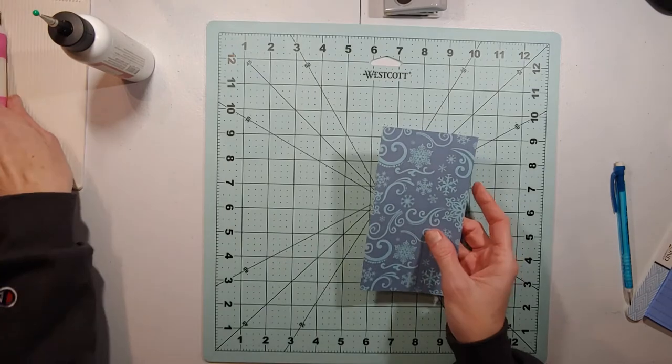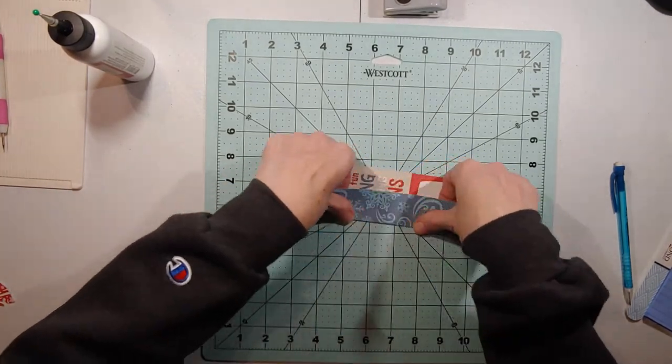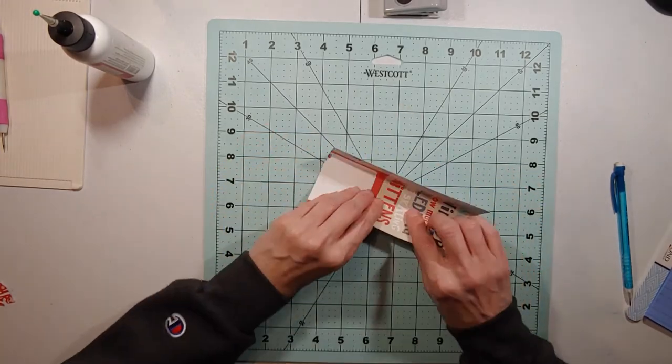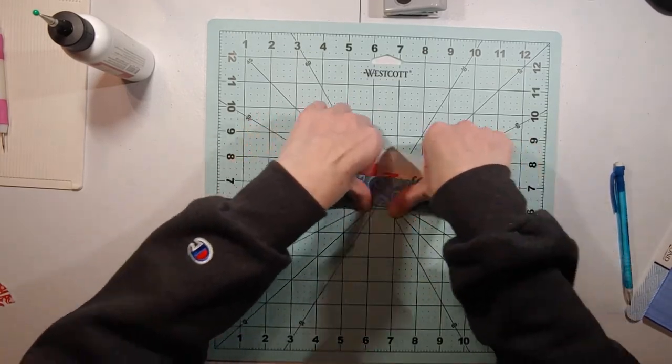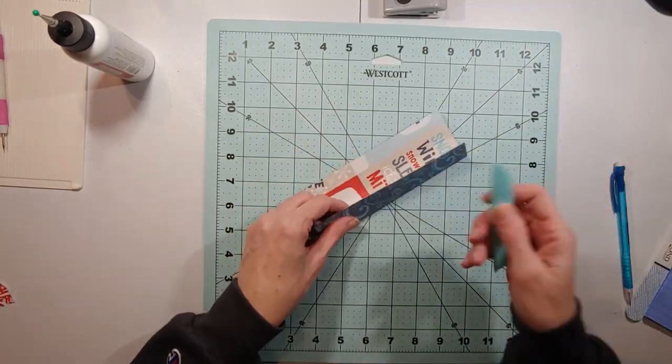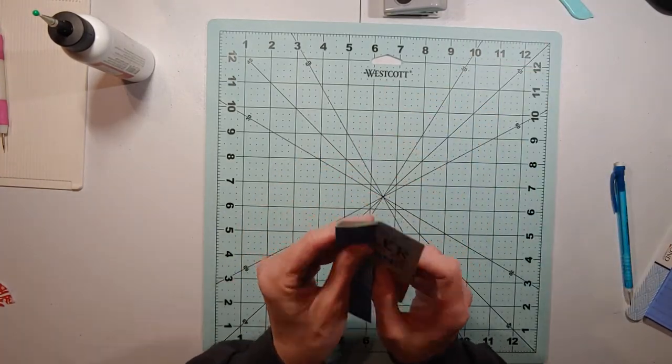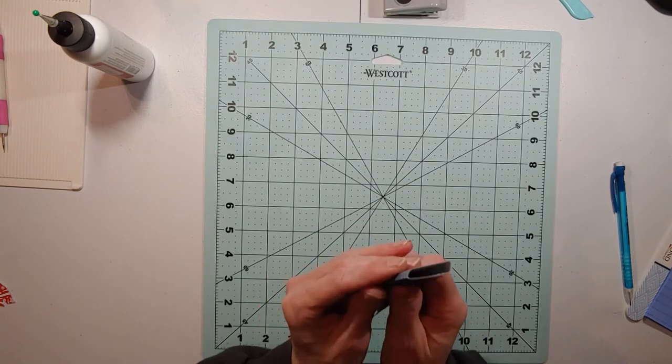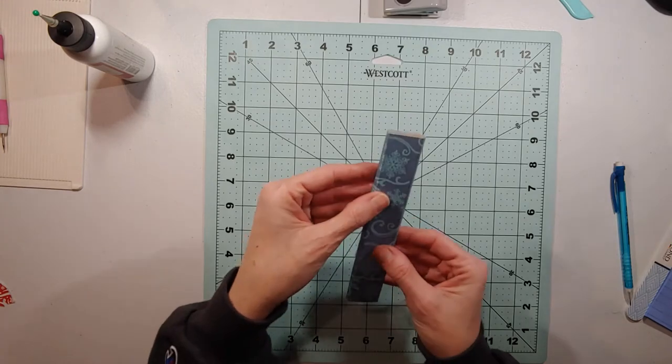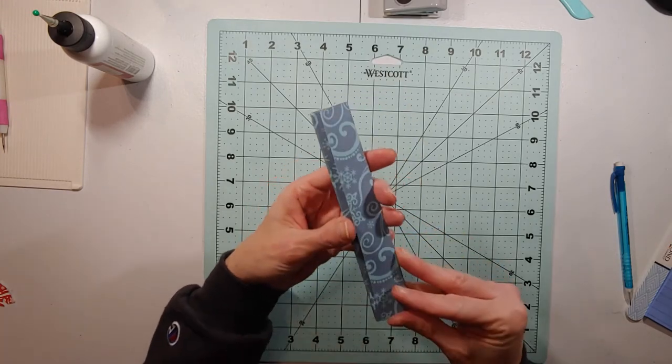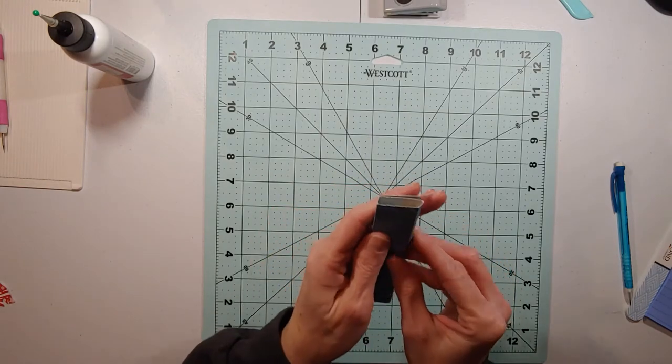Then you just want to go ahead and fold this over on your score lines. Just to go ahead and get a nice fold. You can use your fingers to burnish, or if you have a bone folder, you can use that as well. And you can go ahead and shape it. I'm going to go ahead and shape this and show you. See, that makes your skinny box for your file folder. That easy.